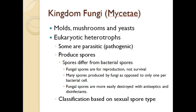Fungi produce spores for reproduction. Their spores are different from bacterial spores — bacterial spores are for survival. Only a few genera of bacteria produce spores for survival, and they only produce one spore inside of their cell. Fungi are very different: they produce many spores, which are much more easily destroyed by antiseptics and disinfectants, and they very easily spread around the room.